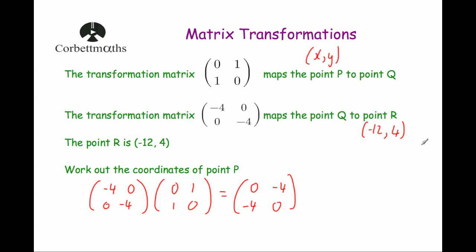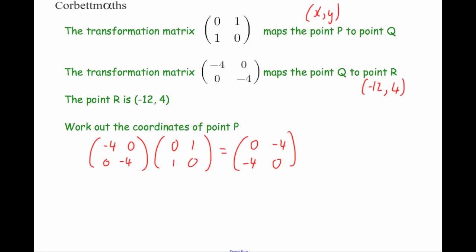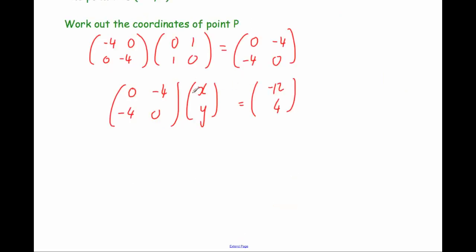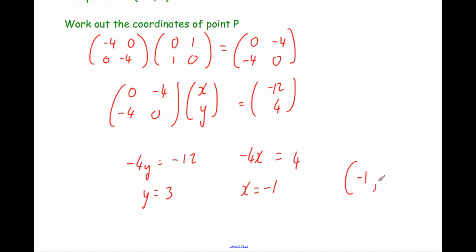Now we multiply the combined matrix (0, minus 4, minus 4, 0) by (x, y) and set it equal to (−12, 4). The first row gives 0x minus 4y equals minus 12. The second row gives minus 4x plus 0y equals 4. Dividing the first equation by minus 4: y equals 3. Dividing the second by minus 4: x equals minus 1. So the coordinates of point P are (−1, 3).